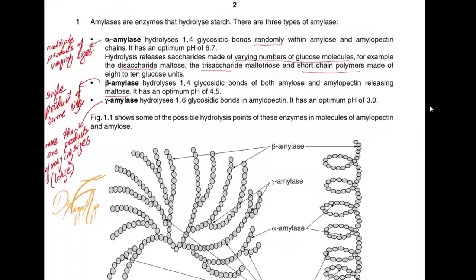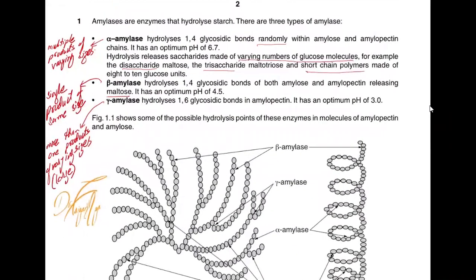Now the question was amylases are an enzyme that hydrolyzes starch. There are three types of amylase: alpha amylase, beta amylase, gamma amylase. If you read the description, it is told you alpha amylase hydrolyze 1,4 glycosidic bond randomly within amylose and amylopectin. It is having an optimum pH of 6.7. Hydrolysis releases disaccharides of varying number of glucose molecules, for example, disaccharide maltose, trisaccharide maltotriose and so on. So multiple products of varying sizes can be produced from alpha amylase.